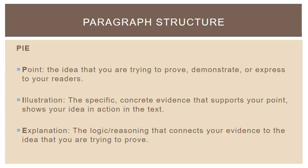What's the idea about the poem or piece of literature that you're interpreting that you're trying to express? The illustration would be the specific concrete evidence that supports your point and shows your idea in action in the text. When you're writing about literature, this is usually going to be an actual quotation from the text itself. And finally, you have an explanation — that is the logic or reasoning that connects your evidence to the point, to the idea that you're trying to prove.